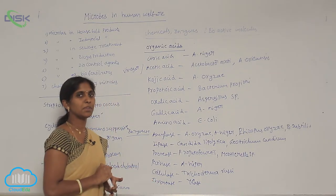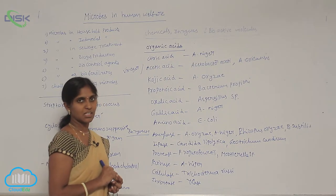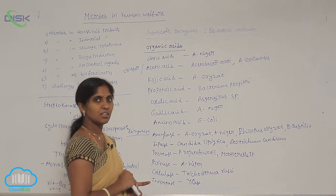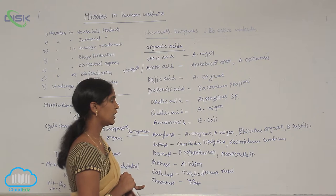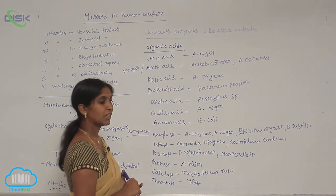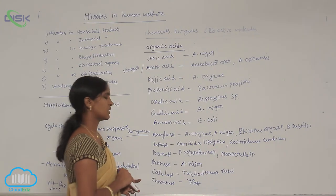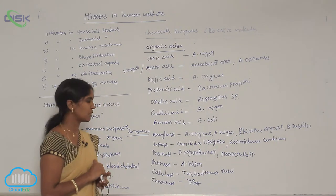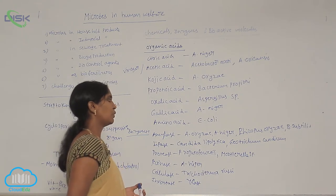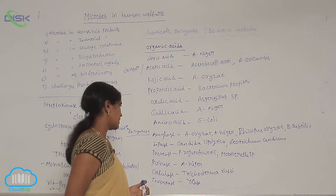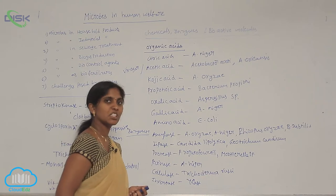Lipases are lipid-digesting enzymes, artificially synthesized using Candida lipolytica and Geotrichum candidum. Proteases are protein-digesting enzymes prepared from Penicillium roqueforti and Mucor species. Pectinases are pectin-digesting enzymes obtained from Aspergillus niger.